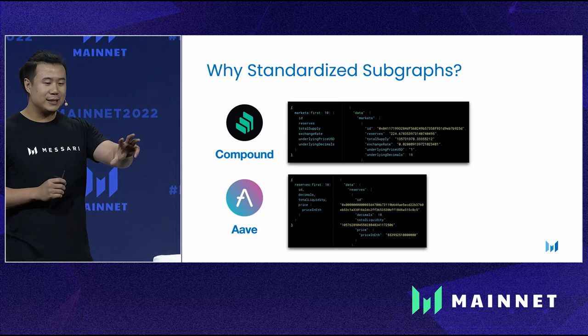We started looking at these subgraphs and discovered that although they're great, many of them look very different from one another — they have different data models and different schemas. It takes a lot of work to pull in this data. That's why we decided to build a standardization layer on top of these subgraphs to make the process easier for data consumers.